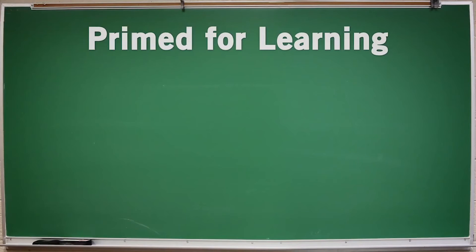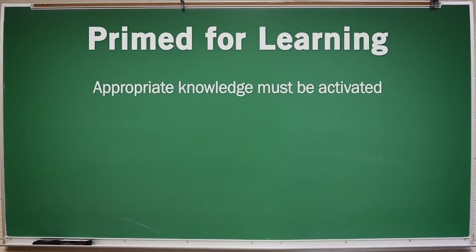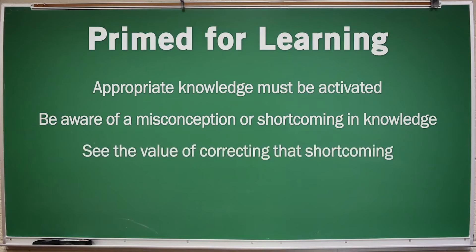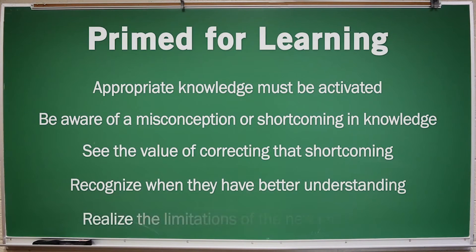Students must be primed for learning. This has to do with metacognitive awareness, prior knowledge, and misconceptions. Students must have the appropriate prior knowledge activated. They must be aware that there is a gap or limitation or misconception in their understanding. They must see the value in correcting that shortcoming. They must be able to recognize when they have achieved a better understanding, but should also recognize the limitations of this new knowledge. Ideally, being primed to learn means that students are motivated to use the information after the exam and beyond our classrooms. If students believe that their knowledge is already sufficient about a topic, or if they're unaware of their level of understanding, then they're unlikely to learn.